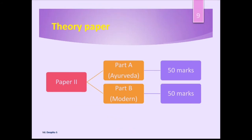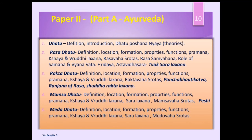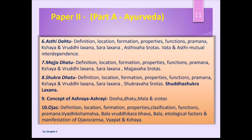Coming to Paper 2, it also has two subdivisions — Part A for Ayurveda and Part B for modern, each for 50 marks. In Paper 2, Part A (Ayurveda portion), we will study the remaining basic concepts of Ayurveda. For example, descriptions of dhatu (body tissues) — what they are, their properties, and functions. We will study individual dhatus in detail: Rasa, Rakta, Mamsa, Meda, Asthi, Majja, and Shukra dhatu — each covered from definition, location, formation, functions, measurement, and applied aspects.